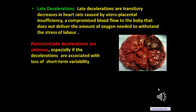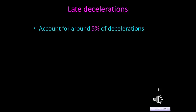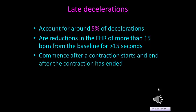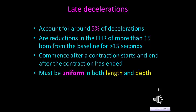Persistent late decelerations are ominous, especially when associated with loss of short-term variability. Late decelerations account for about 5% of decelerations — the other 5% being early decelerations. They are reductions in fetal heart rate of more than 15 beats per minute from the baseline for 15 seconds duration, commence after the contraction starts, end after the contraction has ended, and must be uniform in both length and depth.